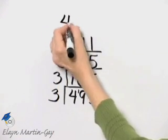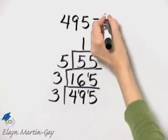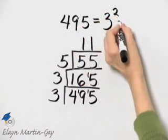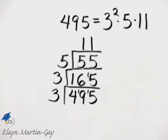Or I can write this as three squared times five times eleven. And you can check by multiplying.